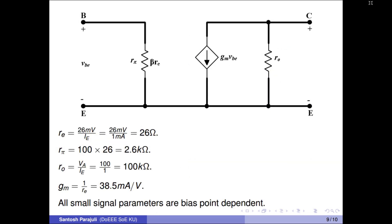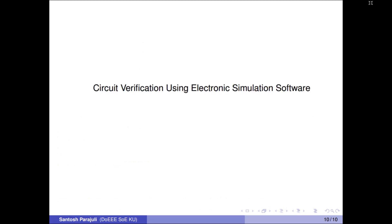The small signal emitter diode resistance Re is 26 ohms at 1 milliampere emitter current. Ro is early voltage over emitter current, or 100 kilohms. Gm is 1 over Re, which is 38.5 milliamperes per volt. Now let's verify the circuit using Multisim, an electronic simulation software.